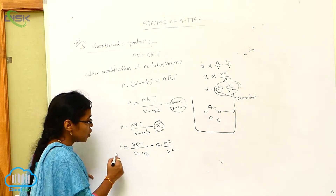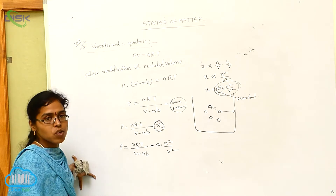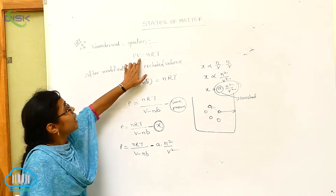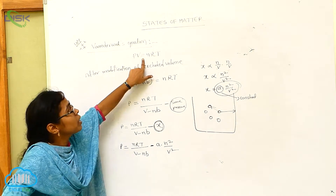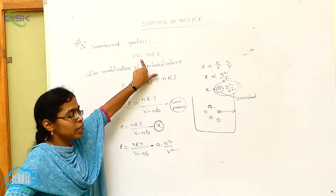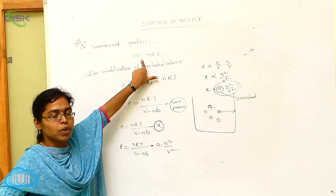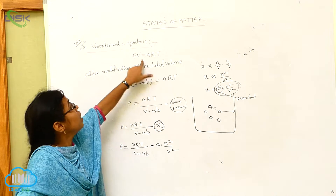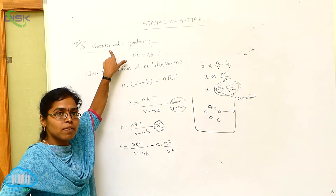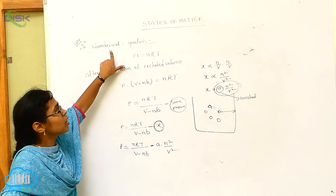It is the modification of pressure for the Van der Waals equation. The ideal gas equation PV equals NRT is not suitable for all conditions and all gases. So Van der Waals proposed an equation which is suitable for all gases at all conditions.